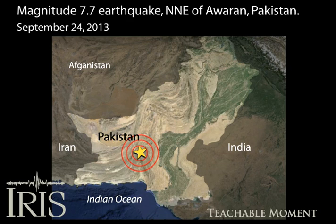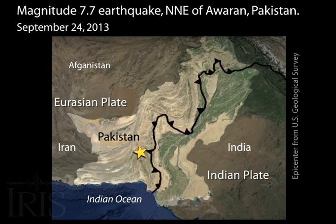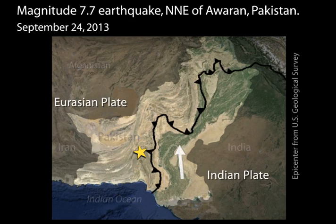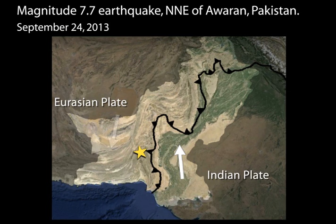Pakistan is split along the boundary between the Eurasian and Indian plates, where the India plate slides northward relative to the Eurasia plate in the east. The Eurasia plate is also being shoved by the Arabia plate as it subducts northward beneath the Eurasia plate along the boundary south of this map.